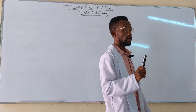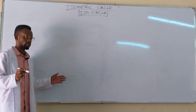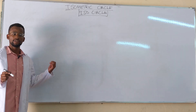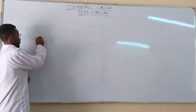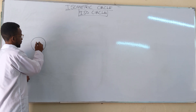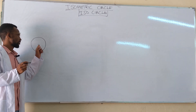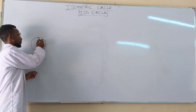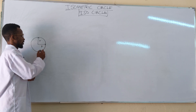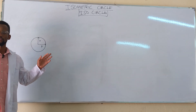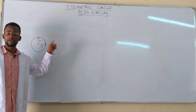For example, if we consider a normal 2D circle, you get your compass, open it to the given radius, and then draw a circle. For this circle, the center and circumference have the same radius throughout — the distance is the same throughout the circle. So for this circle, you only need one center, open your compass to the given radius, and you'll be able to draw it.